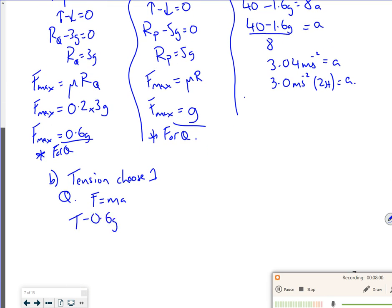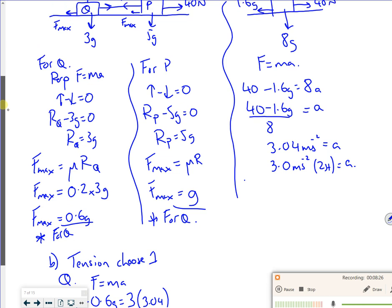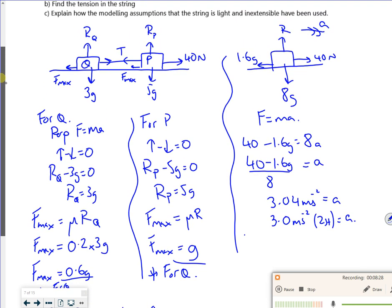And that's equal to a mass of 3 times my acceleration of 3.04. So T is 3 times 3.04, add on 0.6g. So that gives me a tension of roughly 15 newtons to 2 sig fig. That would be okay. I've got to go too fast with that. I hope not. So I chose Q because it was easy. I can choose P. If I'm accurate, I get exactly the same answers.